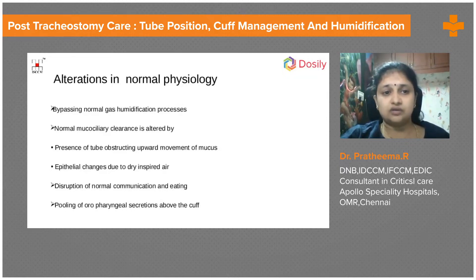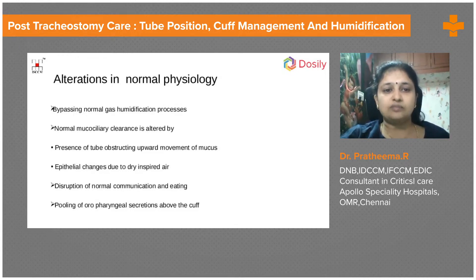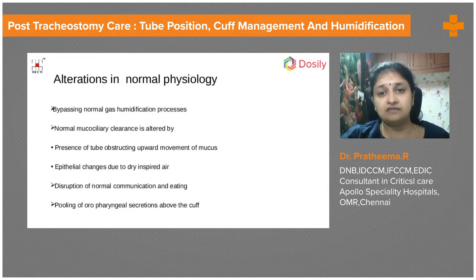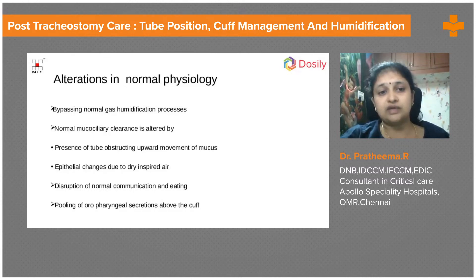What are the normal physiology alterations we make when we put in a tracheostomy tube? We are bypassing the normal gas humidification process, which is the nose. When a patient breathes through the nose, the air is adequately warmed and humidified. This processed humidification does not happen when we put a tube through a hole in the trachea — we are bypassing the normal gas humidification.